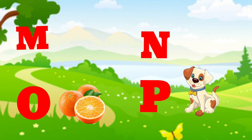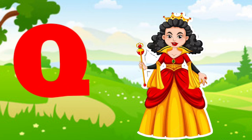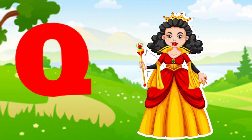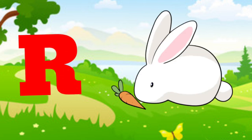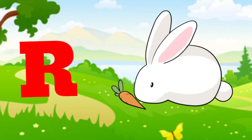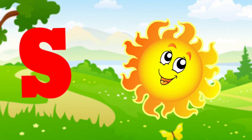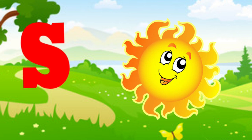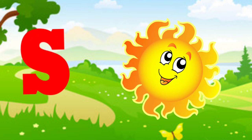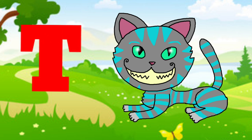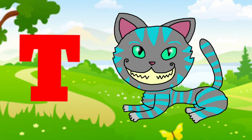Q is for queen, q-q-queen. R is for rabbit, r-r-rabbit. S is for sun, s-s-sun. T is for toad, t-t-toad.